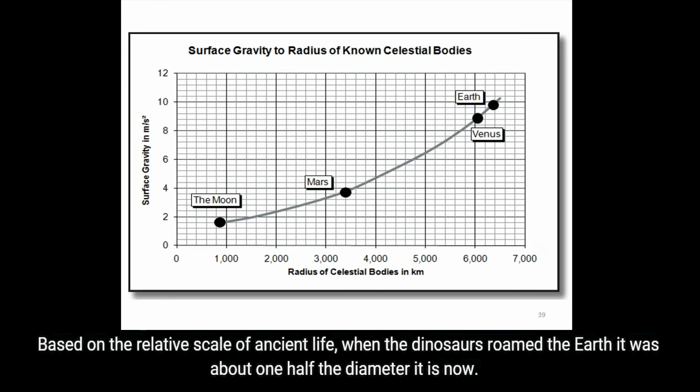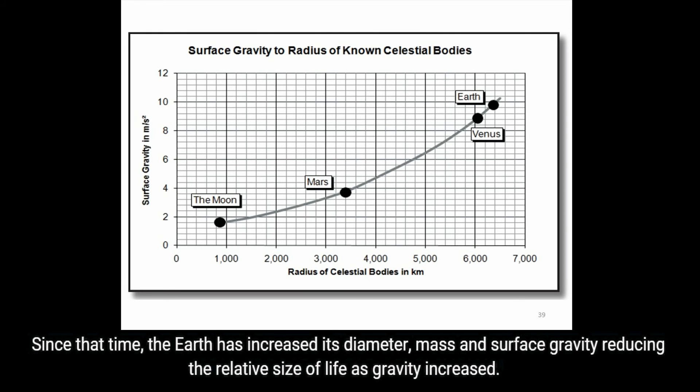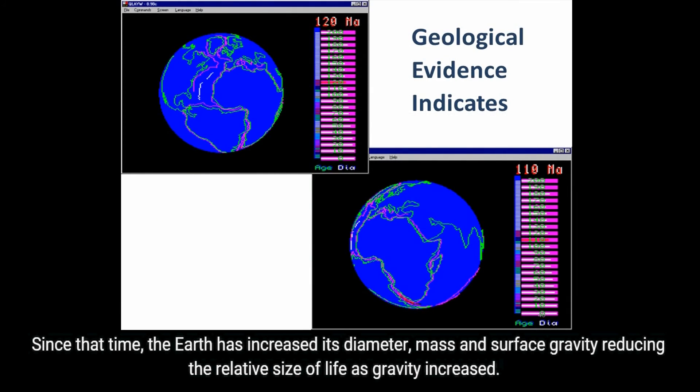Based on the relative scale of ancient life, when the dinosaurs roamed the Earth, it was about one-half the diameter it is now. Since that time, the Earth has increased its diameter, mass, and surface gravity, reducing the relative size of life as gravity increased. This ancient reduced-gravity Earth is remarkably similar to the geological evidence for an expanding Earth.